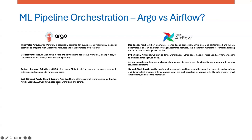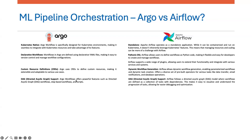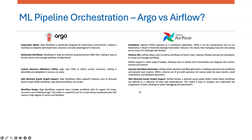Next is the DAG — Directed Acyclic Graph — support. Argo workflows offers powerful features such as directed acyclic workflows, best-effort workflows, and scripts. This particular feature is shared by both Apache Airflow and Argo, so there is not much difference here.